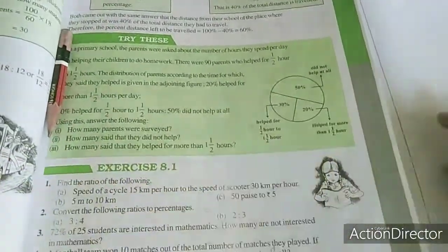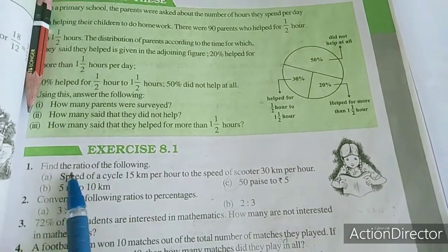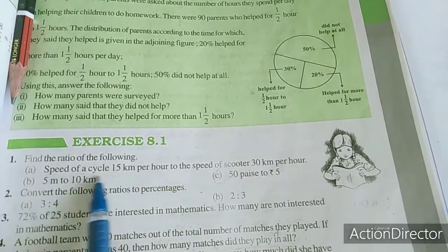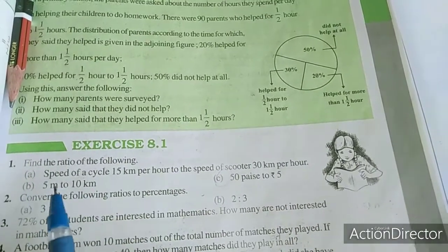We will move to the exercise, exercise 8.1, first sum. Find the ratio of the following - they are giving some sums, we want to find out the ratio.